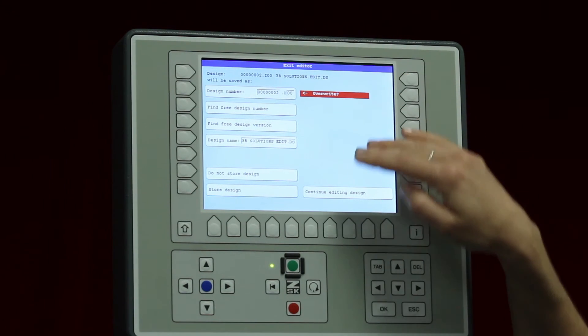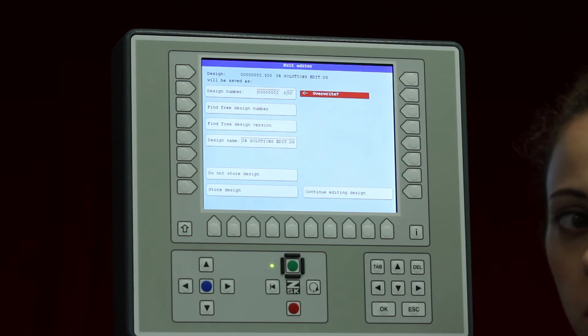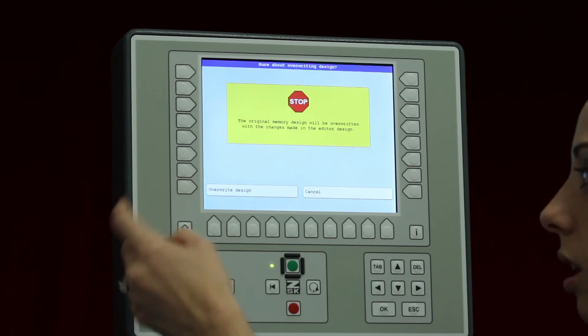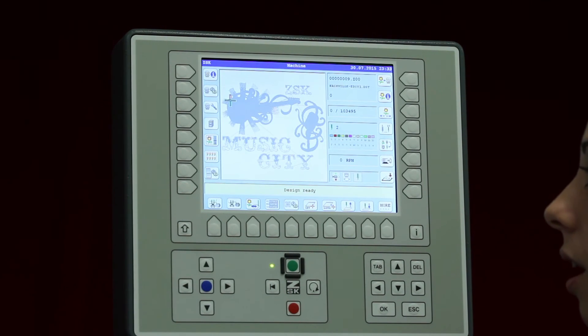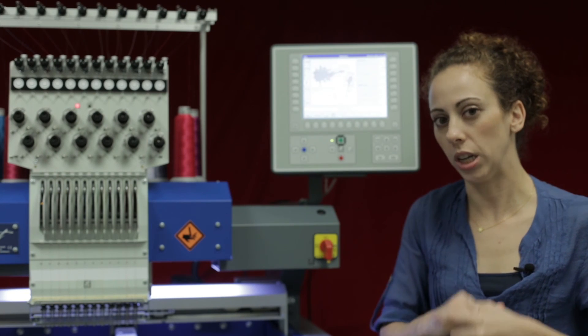Now when exiting it asks me if I would like to overwrite it. Since I do want to overwrite it, I don't want to have another version of it, I will just go ahead and click store design and I will then overwrite the design. After I overwrite it I have changed that design along with this design that I did bring in.